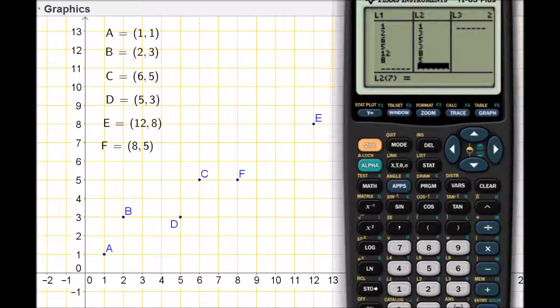Before I leave, I want to just double check that I have an equal number of values in each column. My x's and my y's should be the same, and they are. I'm now going to leave the statistics editor by pressing 2nd and quit.